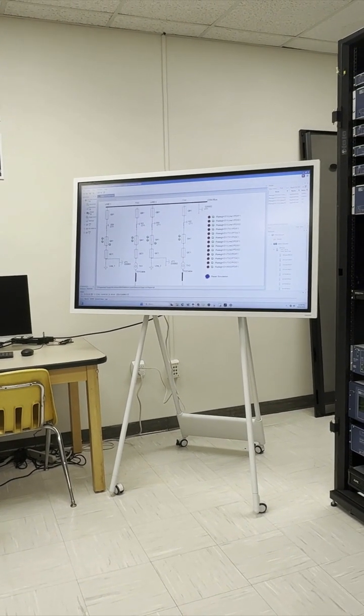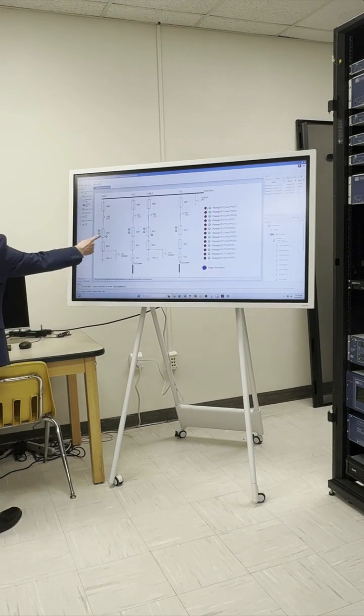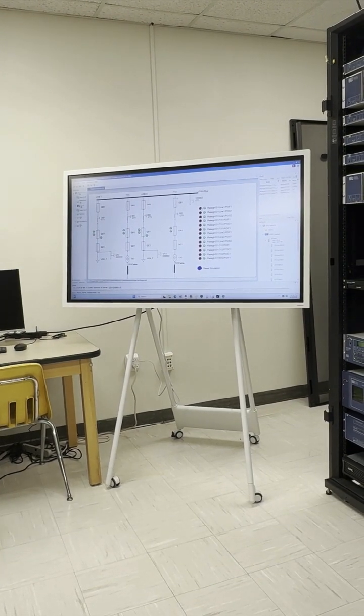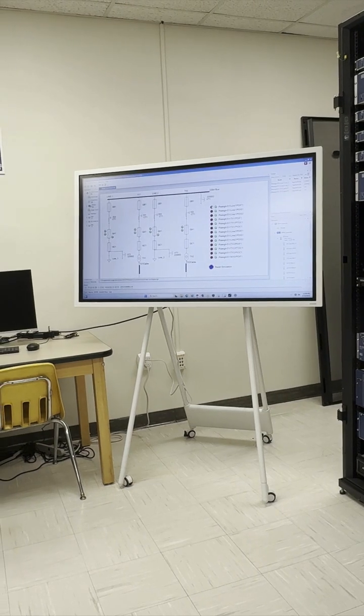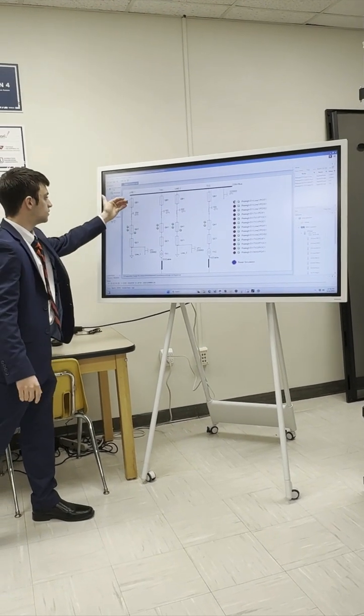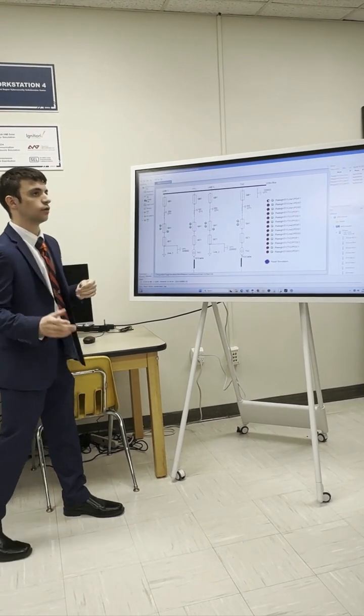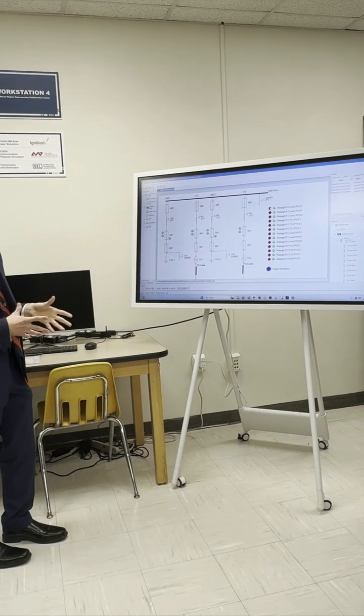So if I were to click this fault button, we'll see this breaker open and close, I hope at least. There you go. The breaker opens and closes, the current transform value changes, and it captures all that in simulation.